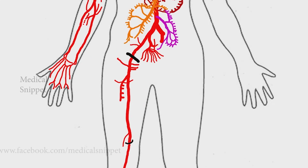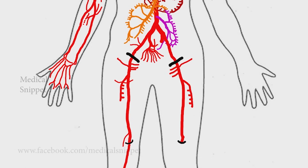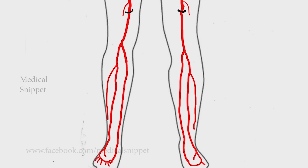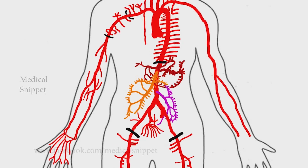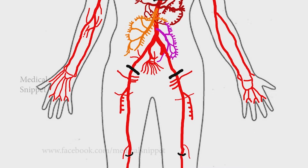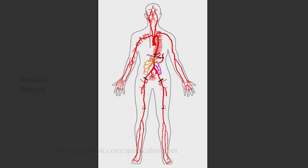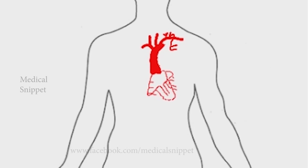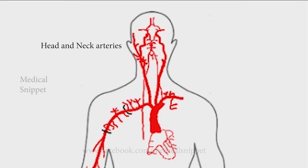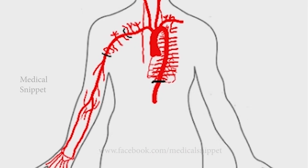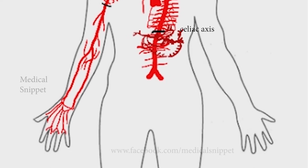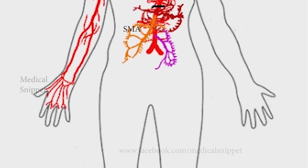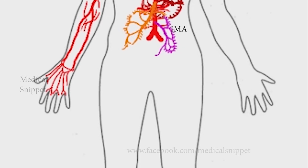Let's complete the arterial system of the left upper and lower limbs. Now let's see the whole arterial tree of the human body: coronary arteries, upper limb arteries, head and neck arteries, thoracic aorta arteries, celiac axis, superior mesenteric artery, and inferior mesenteric artery.